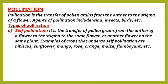Self-pollination is the transfer of pollen grains from the anther of a flower to the stigma of the same flower, or another flower on the same plant. So let's take note: it is the transfer of pollen grains from the anther of a flower to the stigma of the same flower or another flower on the same plant.